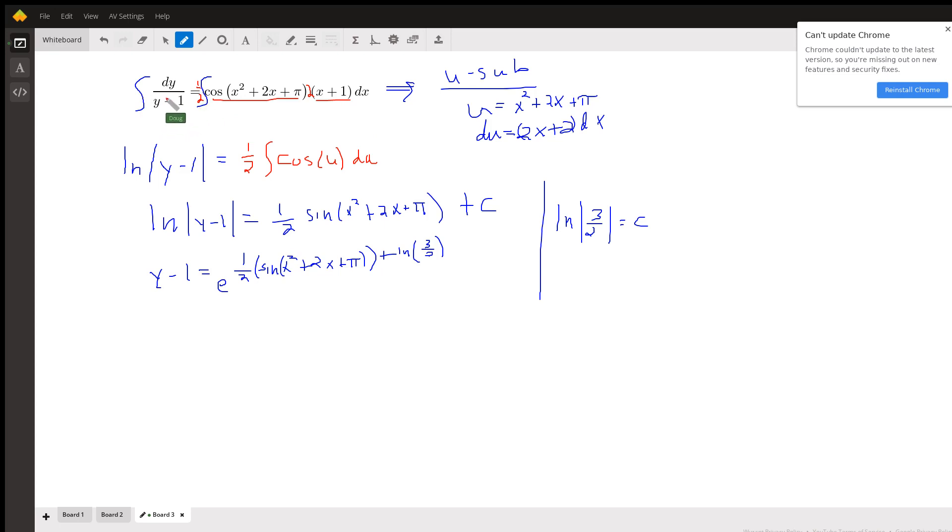So the antiderivative of dy over y minus 1 is ln of y minus 1. But we could put a constant of integration here, but usually we do that on the right side.